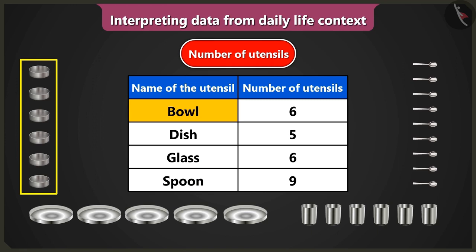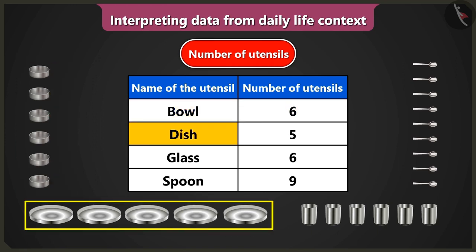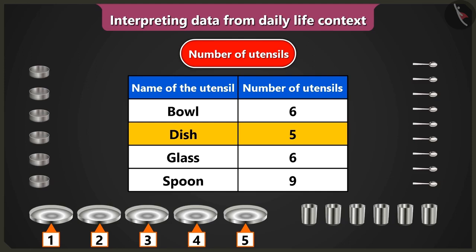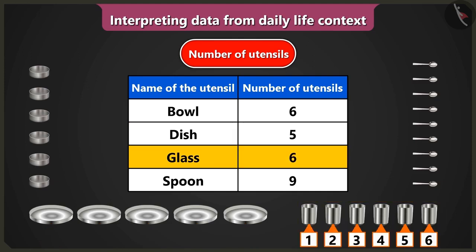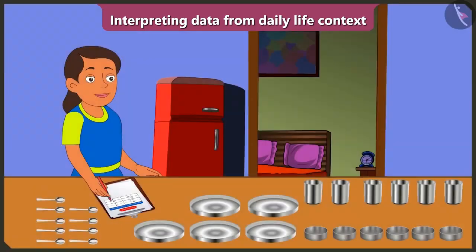The number of bowls is six. The number of dishes are five. The number of glasses are six. And the number of spoons are nine. I have interpreted the data about the number of utensils from this table. Now let's see the second example.